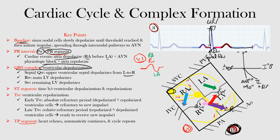Ventricular depolarization has now ended and the QRS complex is complete. Next, we have the ST segment, which is an electrically neutral period between ventricular depolarization and ventricular repolarization. The myocardium is maintaining contraction to expel blood from the ventricles, and this is normally located at the level of baseline. The ST segment starts at the J point or junction point and goes until the beginning of the T wave — this area is electrically neutral, the period between the QRS complex and ventricular repolarization.